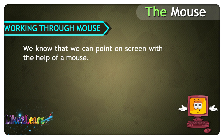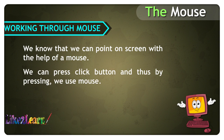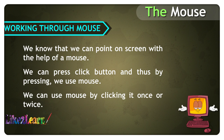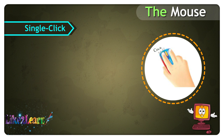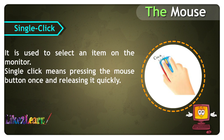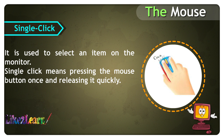Working through mouse. We know that we can point on the screen with the help of a mouse. We can press the click button and use the mouse by clicking it once or twice. Single click is used to select an item on the monitor. Single click means pressing the mouse button once and releasing it quickly.